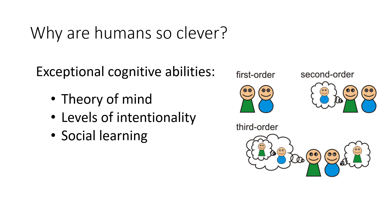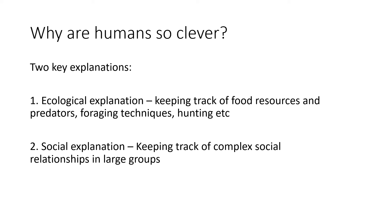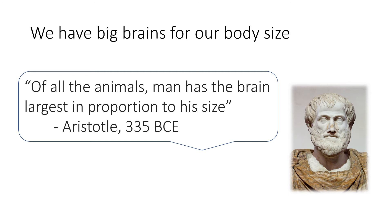We're also capable of social learning and are highly dependent on and focused on learning from others. In terms of explaining why humans have these exceptional cognitive abilities and uniquely high intelligence, there are two key explanations. The first is an ecological explanation, which suggests that we evolved higher intelligence to keep track of food resources and predators, to create foraging techniques and to hunt. The second explanation focuses on our social environment, suggesting that we evolved higher intelligence to keep track of complex social relationships in large groups — and this is the explanation we'll be concentrating on.